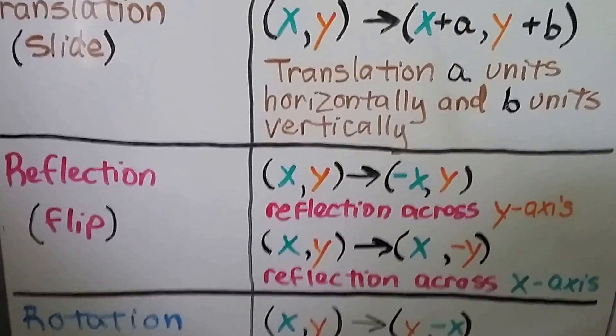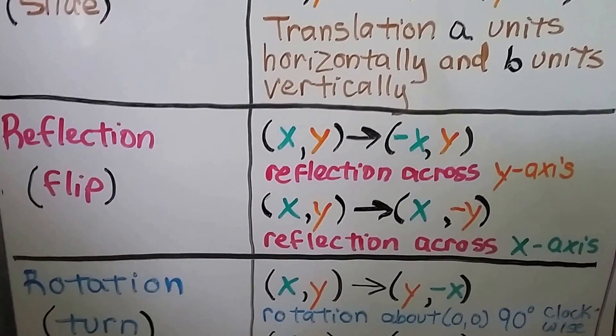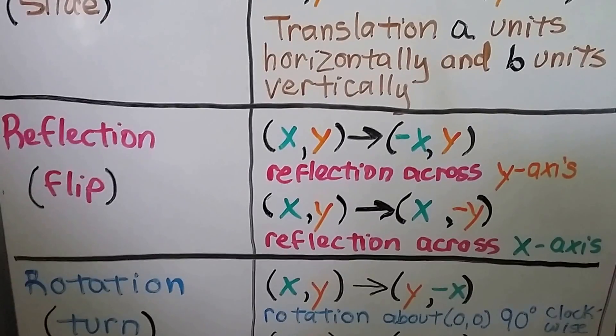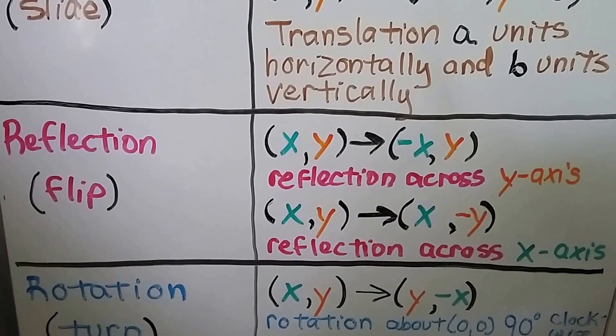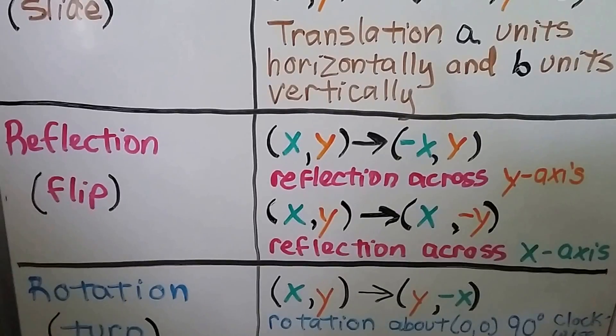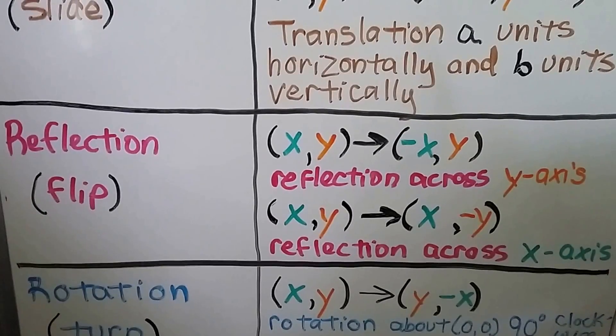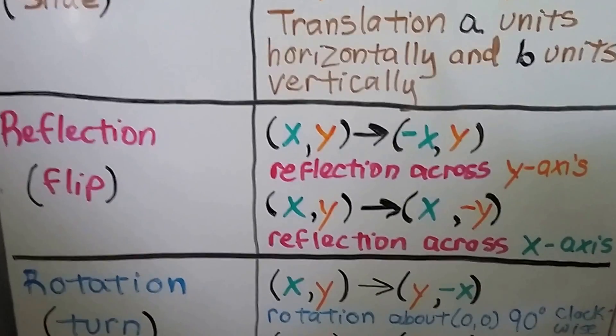We have a reflection. That's a flip. Our x, y would map to negative x, y, and that would be a reflection across the y-axis. And x, y could map to x, negative y. That would be a reflection across the x-axis.